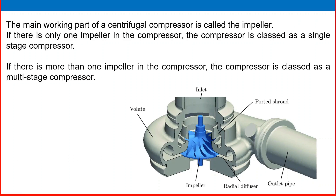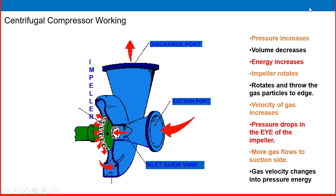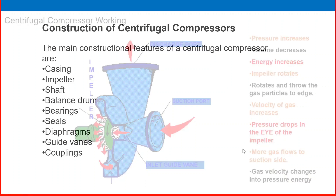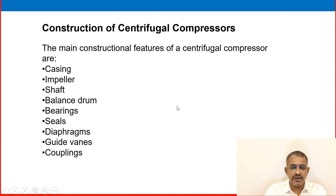The main working part of a centrifugal compressor is called the impeller. If there is only one impeller in the compressor, it is called a single-stage compressor. If there is more than one impeller, it is classified as a two-stage or multi-stage compressor. In brief, when pressure increases, volume decreases and energy increases. The impeller rotates and throws the gas particles to the edge — the velocity of the gas increases, pressure drops at the eye of the impeller, more gas flows to the suction side, and gas velocity is converted into pressure energy.